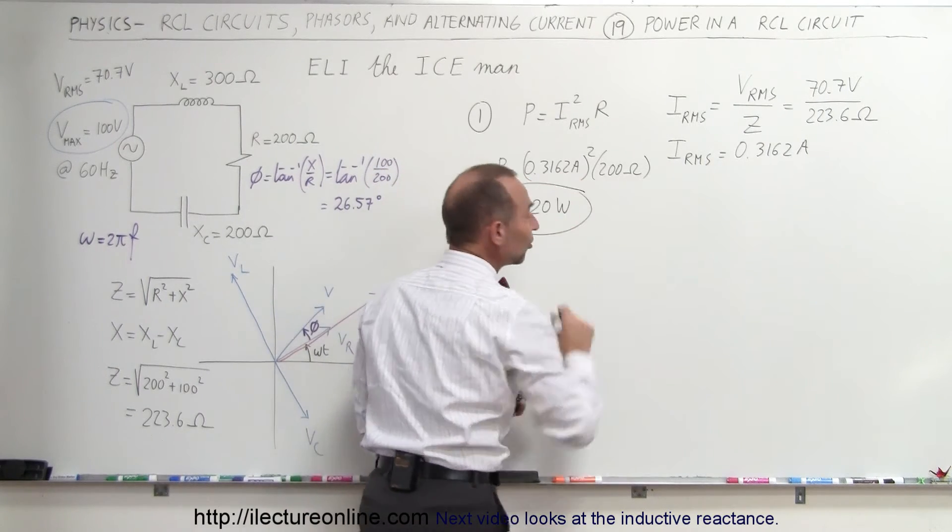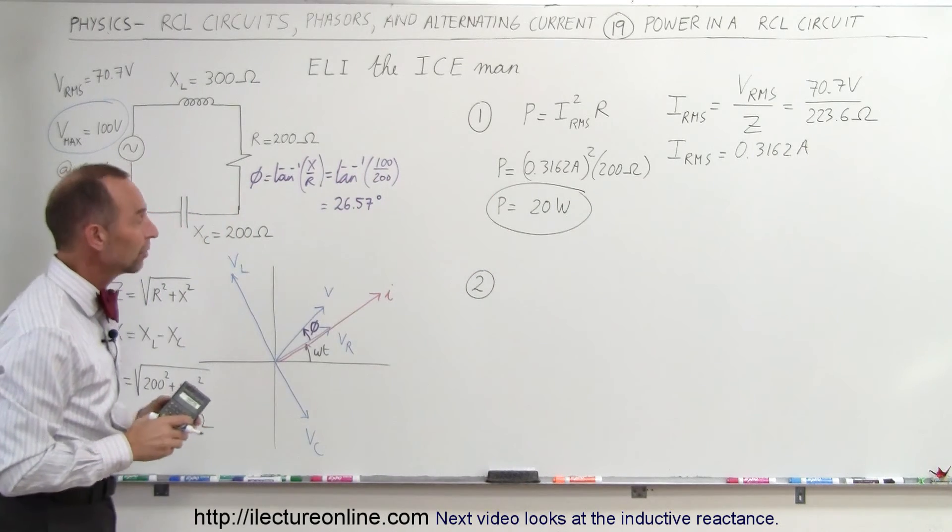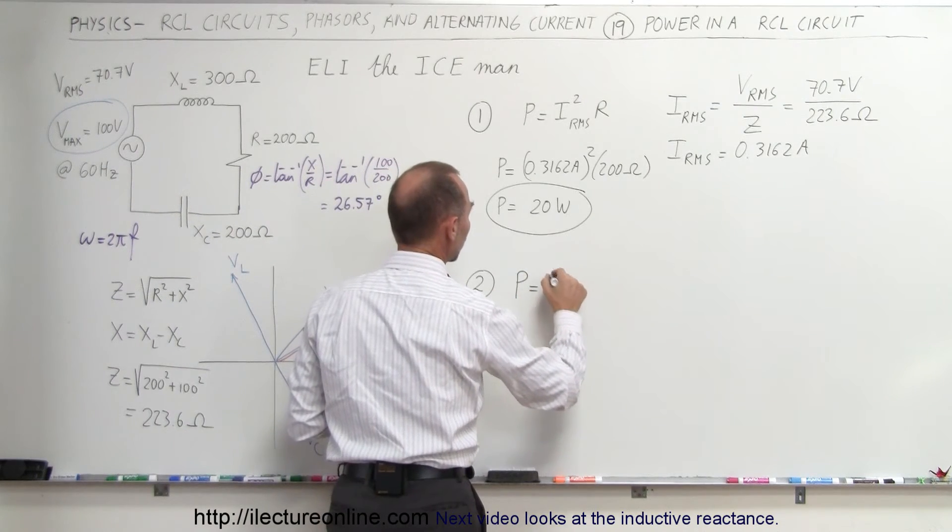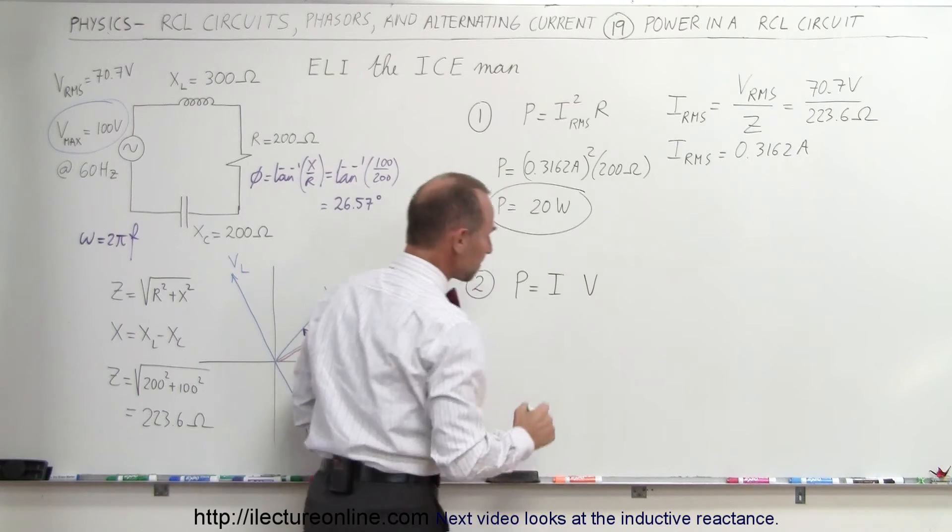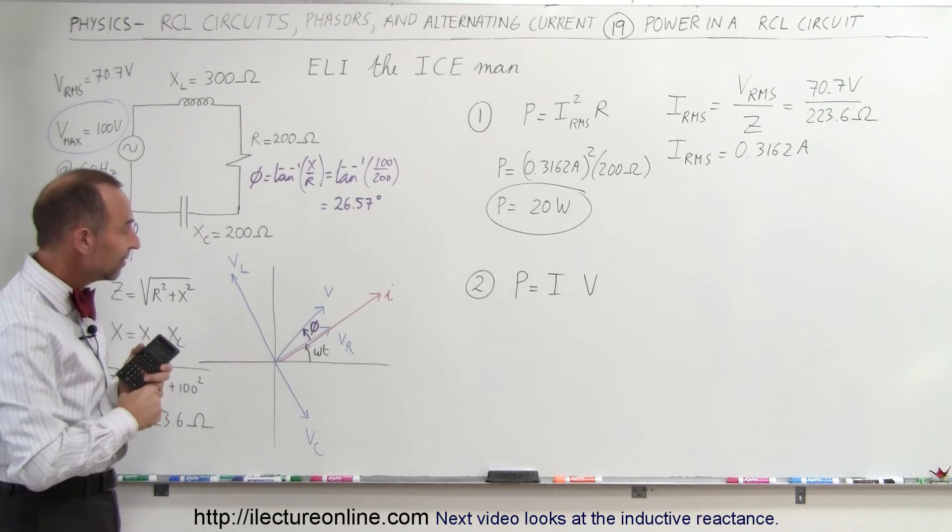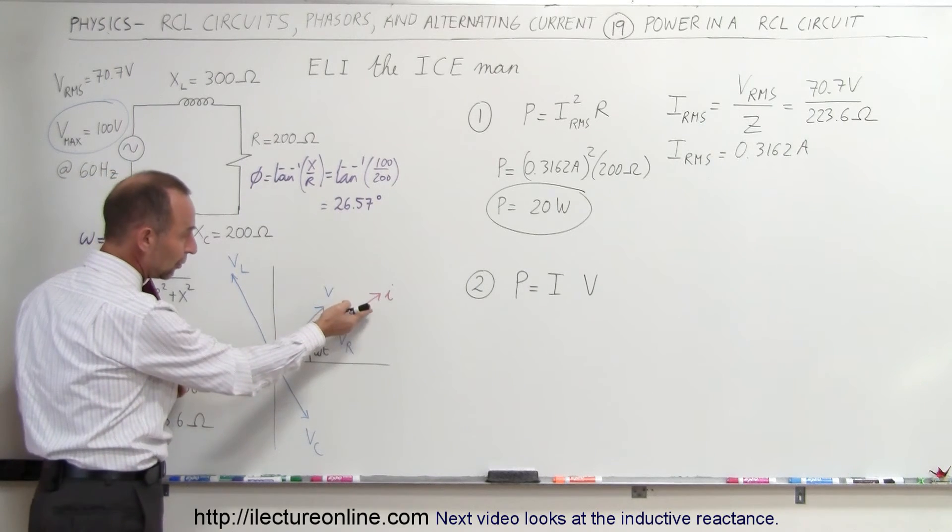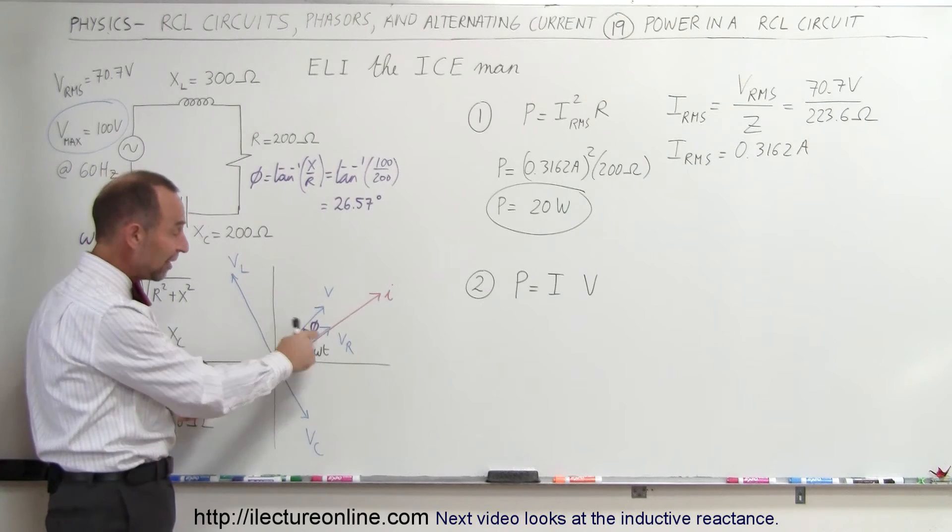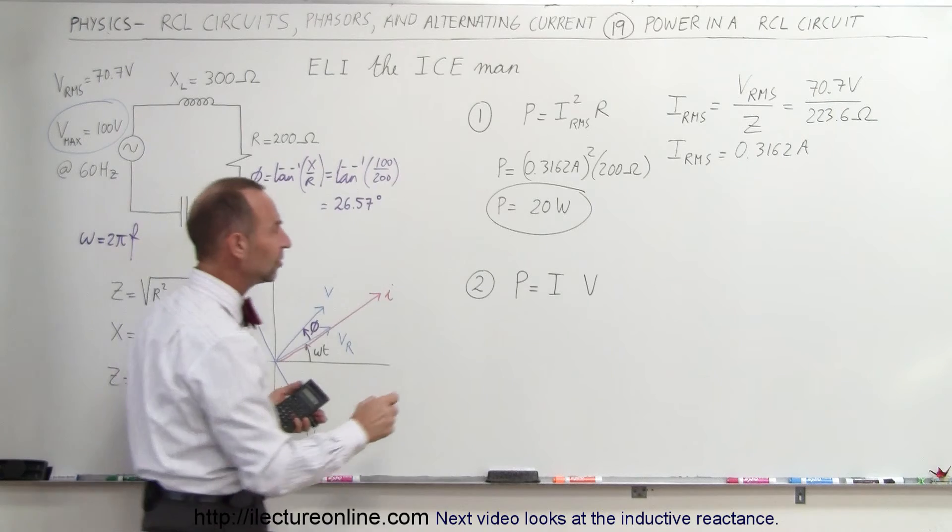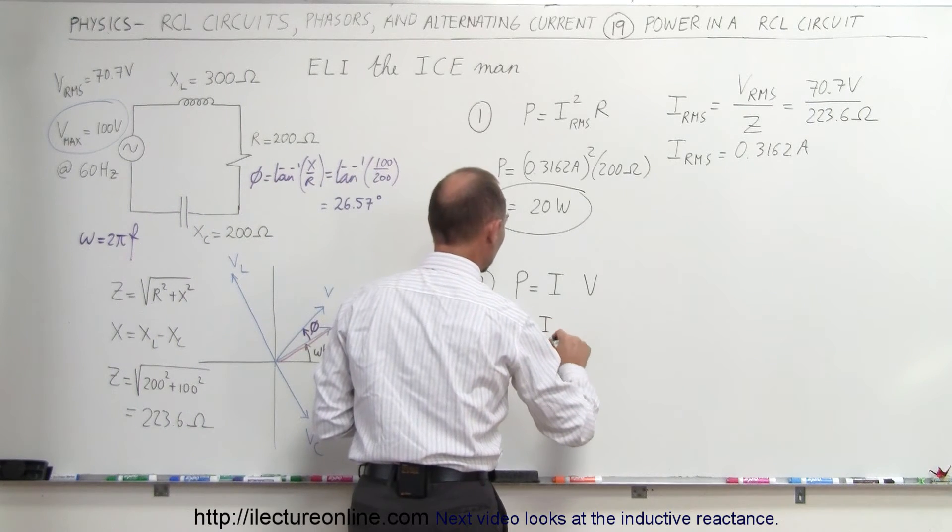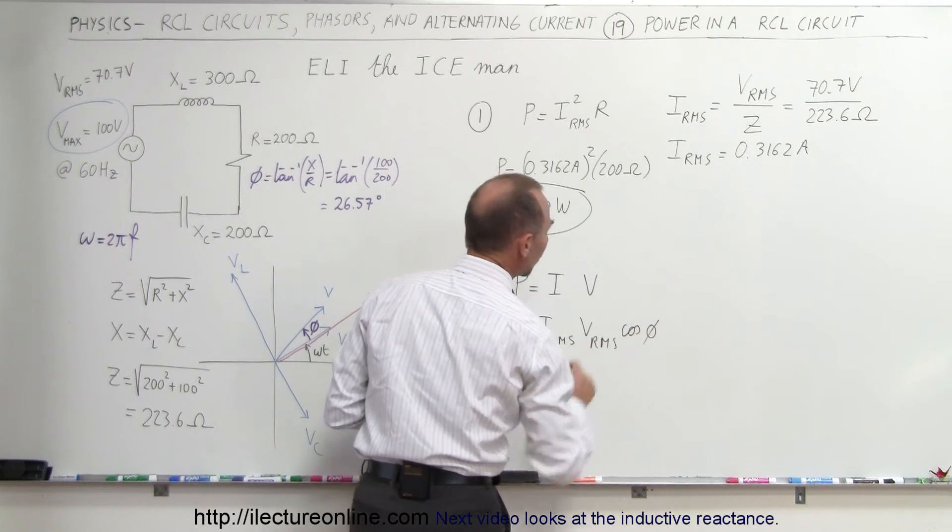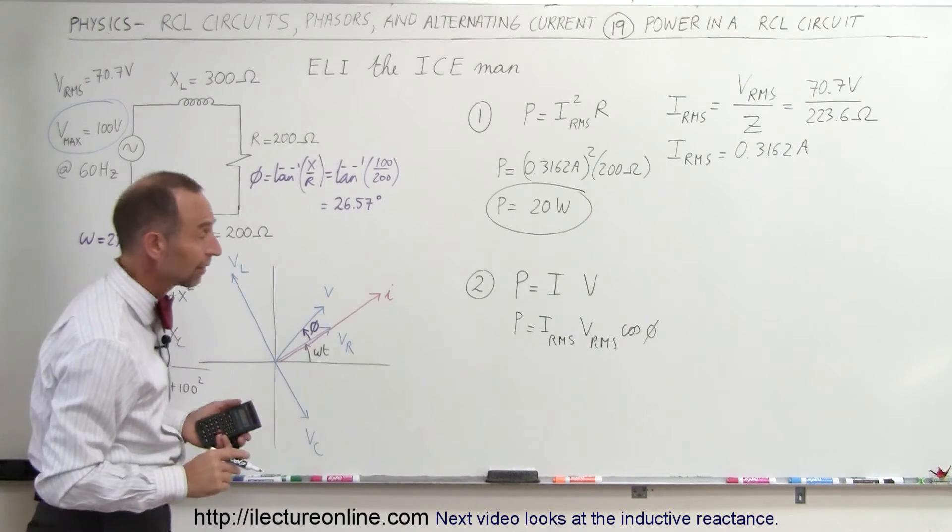So that resistor in that circuit will consume 20 watts. The second way in which we can do that is to realize that the power is equal to the current times the voltage. Now in this case, again, we should use RMS. But notice that the current and the voltage in the circuit have a phase difference. There's a phase angle between them. So therefore, when we multiply together, it's like a dot product. The power is going to be the RMS current times the RMS voltage times the cosine of the angle between the two.